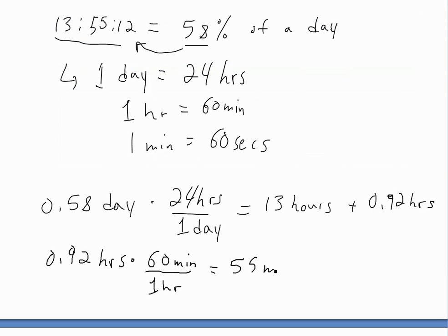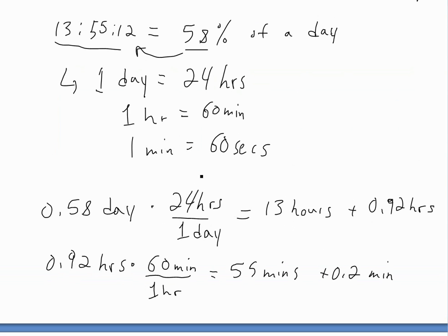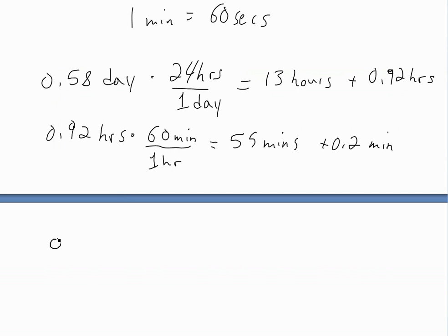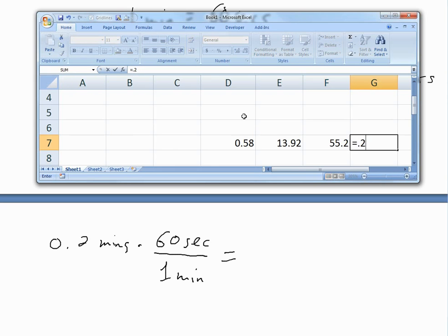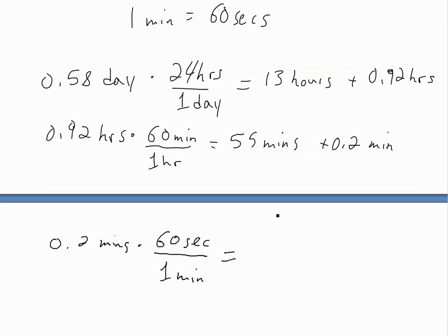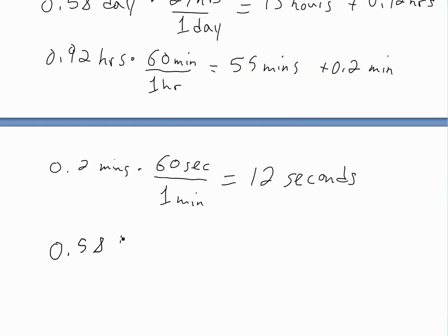Continuing: 0.2 minutes times 60 seconds per minute equals 12 seconds. So putting it all together, 0.58 days equals 13 hours, 55 minutes, and 12 seconds. That's the time. And in 12-hour clock mode, this is 1:55:12 PM.